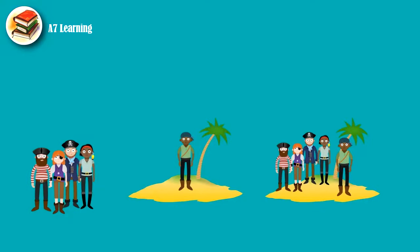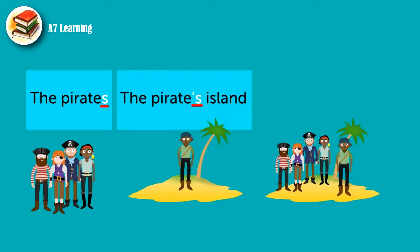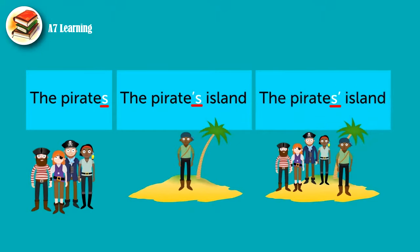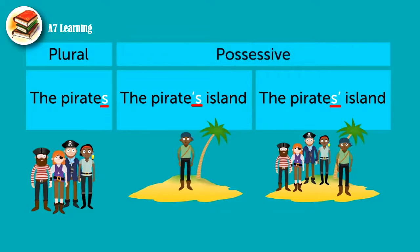The Pirates are written about in three different ways: The Pirates. The Pirates' island. And the Pirates' island. With just an S, pirates is plural — there's more than one pirate. But with an apostrophe and an S, it means something belongs to either one or more of the pirates. This is called possessive S.